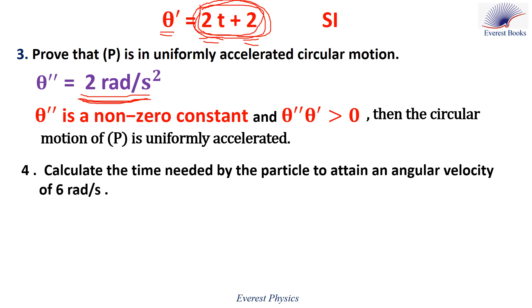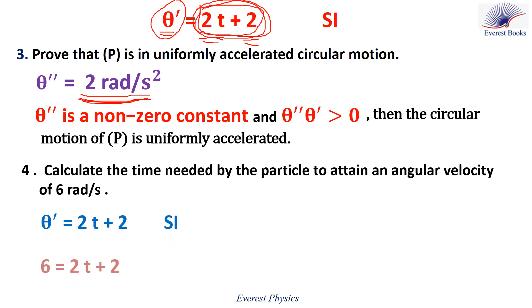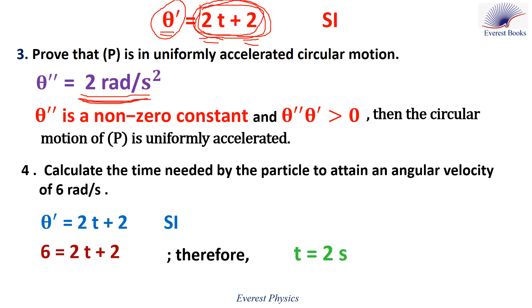Part four: calculate the time needed by the particle to attain an angular velocity of 6 rad/s. Replace θ' in the expression of angular velocity by 6: 6 = 2t + 2, therefore t = 2 seconds.